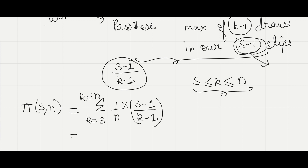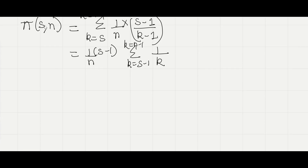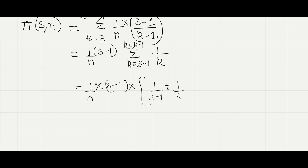Now we simplify this. Factoring out 1/n and (s−1), and changing the summation limits, the sum becomes Σ from k = s−1 of 1/k. This expands to (1/n)(s−1)(1/(s−1) + 1/s + 1/(s+1) + … + 1/(n−1)).